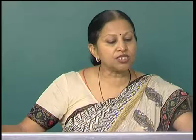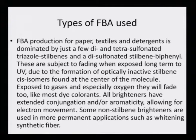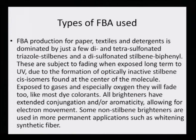Although many fluorescent brightening agents have been made, about 90 are available for commercial purposes and still fewer are popularly used. The fluorescent brightening agent production for paper, textile, and detergents is dominated by just a few: di, tetra, and hexasulfonated triazole stilbenes, and disulfonated stilbene-biphenyl compounds. These are subject to fading when exposed long-term to UV due to the formation of the optically inactive stilbene cis isomer found at the center of the molecule. Over a period of time they are deactivated because they get converted into the cis isomer of the stilbene.